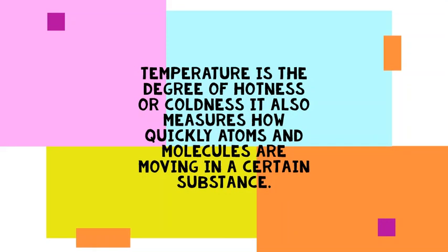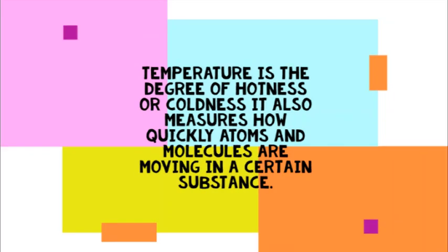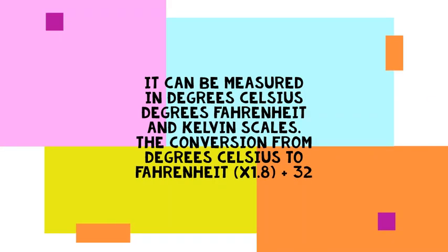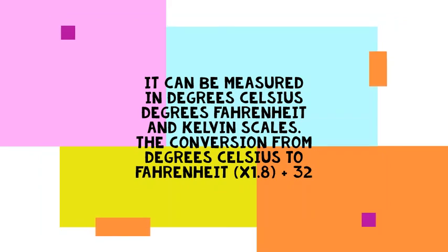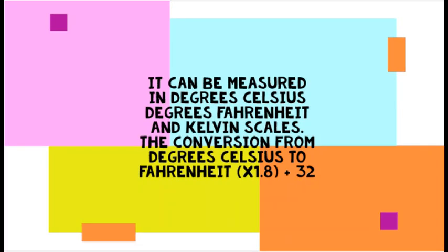You should also know the definition of temperature. Temperature is the degree of hotness or coldness. It is measured using a thermometer. It also measures how fast atoms and molecules are moving within a certain substance. It can be measured in degrees Celsius, degrees Fahrenheit, and Kelvin. The conversion from Celsius to Fahrenheit is by multiplying by 1.8 and adding 32.